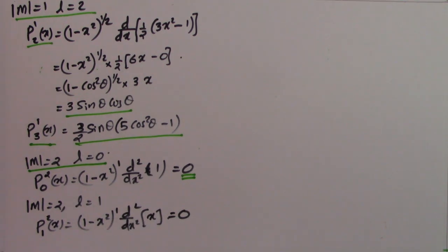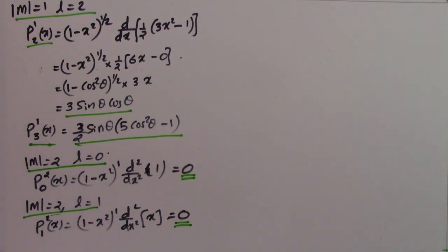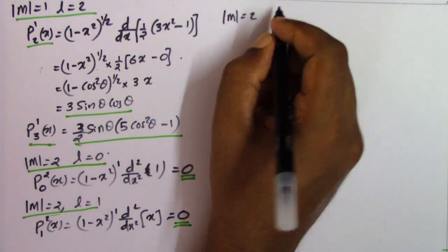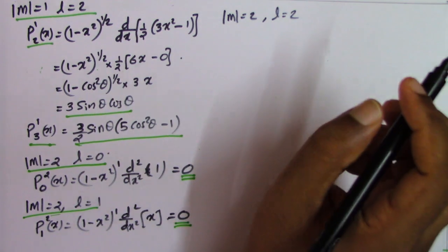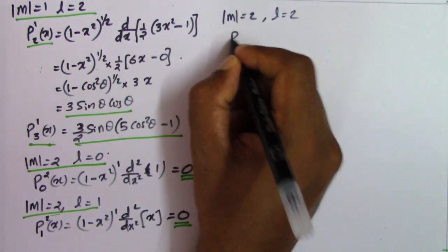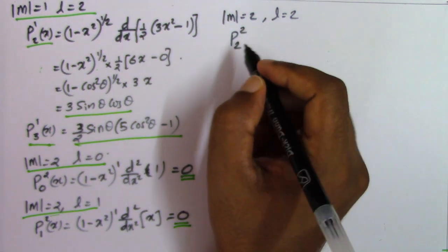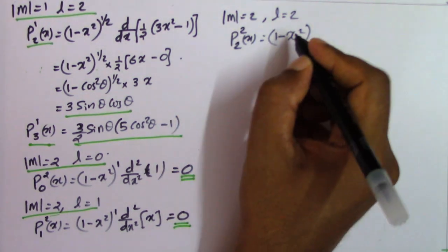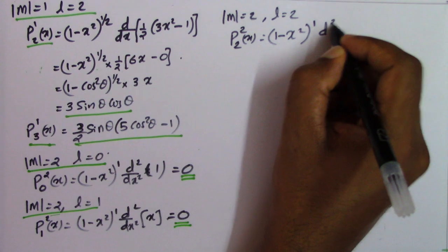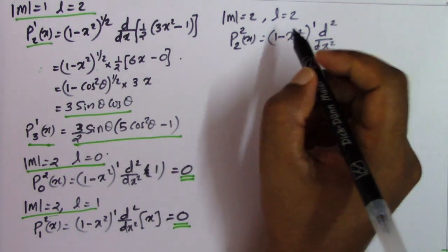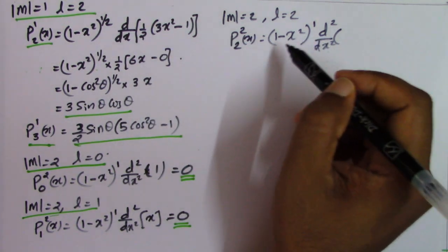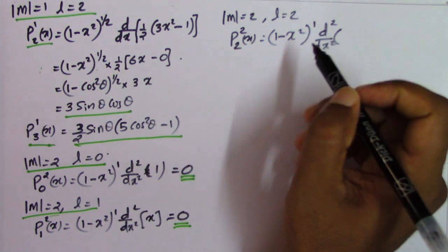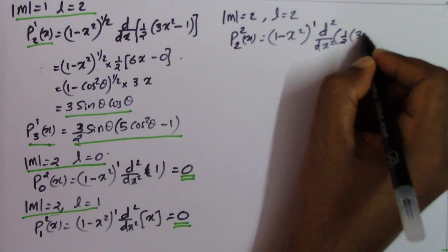This is also very important: when m=2 and l=1, the function vanishes. Now let's calculate the associated Legendre polynomial for m=2 and l=2. P_2^2(x) equals (1 - x²) raised to m/2, where m/2 = 1, times d²/dx² of P_2(x). P_2(x) is half of (3x² - 1).